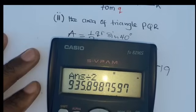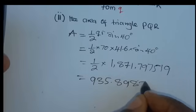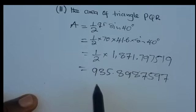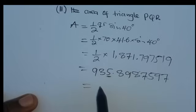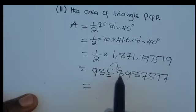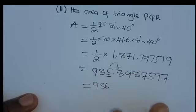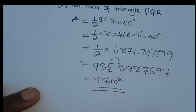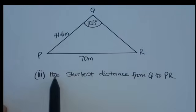Dividing by 2 gives 935.8987597. When the degree of accuracy is not specified, we round to three significant figures. The third significant figure is 5, and the neighbor is 8, which is more than 5, so we round up. The area is 936 square meters.